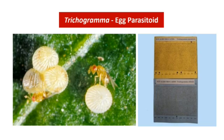On the right side you can see packets containing Trichogramma eggs. You can cut the packets into small pieces and pin them in the agricultural field. After three days, the adult wasps come out and sit as parasites on the eggs and destroy them.